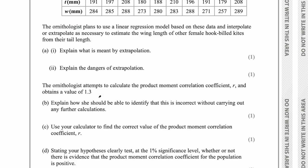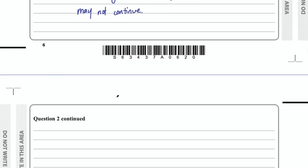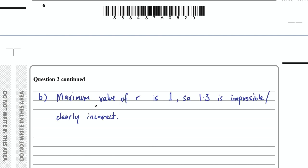Part B says the ornithologist attempts to calculate the product moment correlation coefficient R and obtains a value of 1.3. Explain how she should be able to identify that this is incorrect without carrying out any further calculations. R must be between negative 1 and 1 — it represents the level of correlation between two data sets. You can't have more than a perfect correlation of 1. So 1.3 is clearly wrong. The maximum value of R is 1, so 1.3 is impossible.